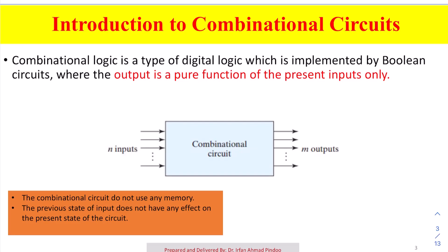We define combinational logic circuits as those type of circuits which are implemented by using Boolean circuits. Boolean circuits may include any type of logic gate — which may be an AND gate, an OR gate, NOT gate, or maybe universal gates as well — and where the output is a pure function of present inputs only.